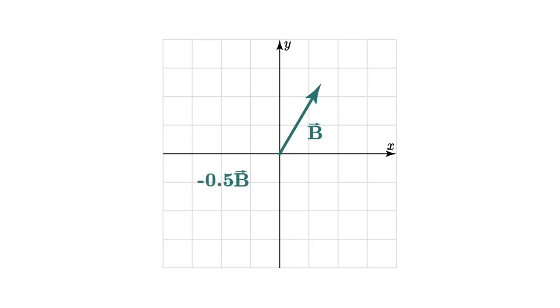If I want minus 0.5 times b, this vector is in the opposite direction of b and is half the length.